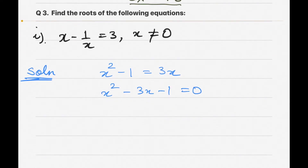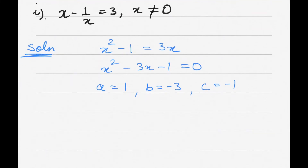Comparing with the general form ax² + bx + c = 0, we get a = 1, b = -3, and c = -1. We can now substitute into the quadratic formula. There are many ways to solve quadratic equations — factorization, completing the square, or the quadratic formula, which is itself derived from completing the square.